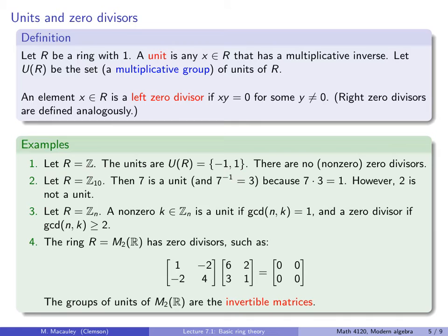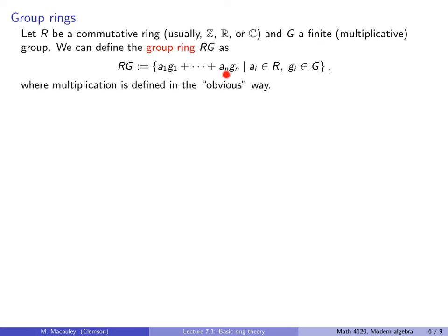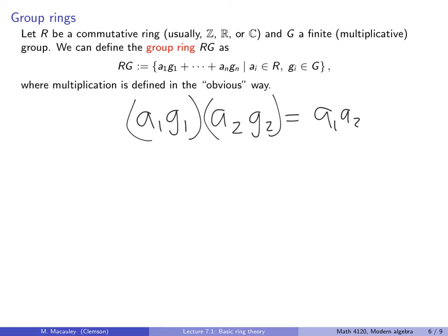Here's another important example. Let R be a commutative ring — usually the integers, reals, or complex numbers — and let G be a finite multiplicative group. We can define the group ring as the set of all finite sums of products of elements from R times elements from G, where multiplication is defined as (a₁g₁)(a₂g₂) = (a₁a₂)(g₁g₂). The order doesn't matter for the ring elements because R is commutative, but it does matter for the group elements since G need not be abelian.